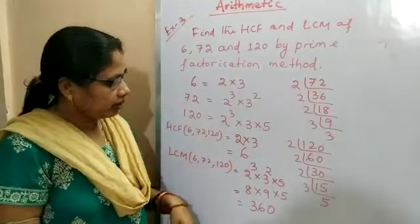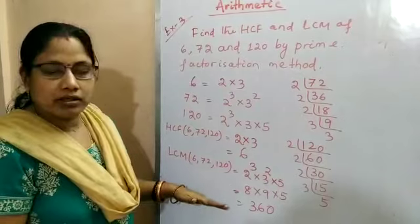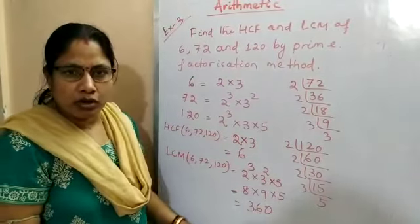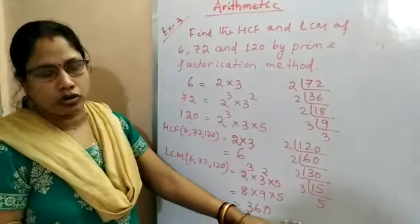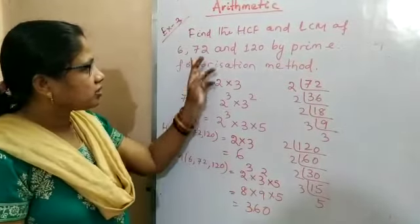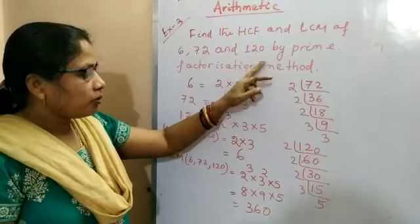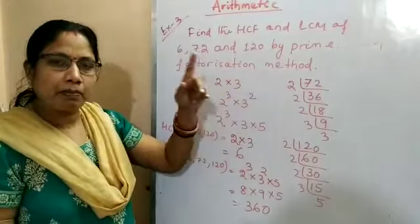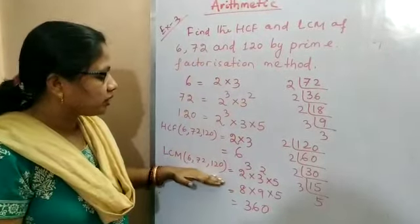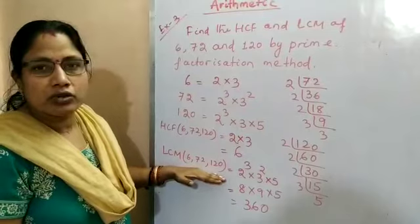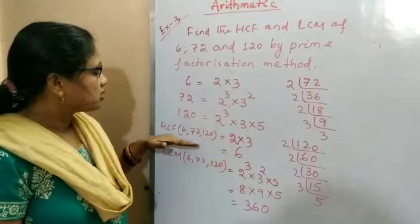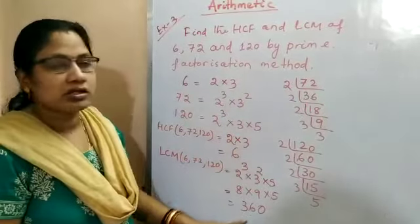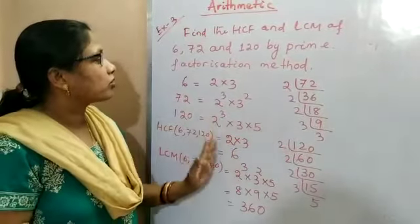Note one thing: earlier I told you that the product of HCF and LCM of two numbers equals the product of those two numbers. But here in the case of three numbers, this is not true. In the previous example, we found the LCM by using that rule. For three numbers, you cannot use that rule — that is, HCF of three numbers multiplied with LCM of three numbers is not equal to the product of those three numbers.